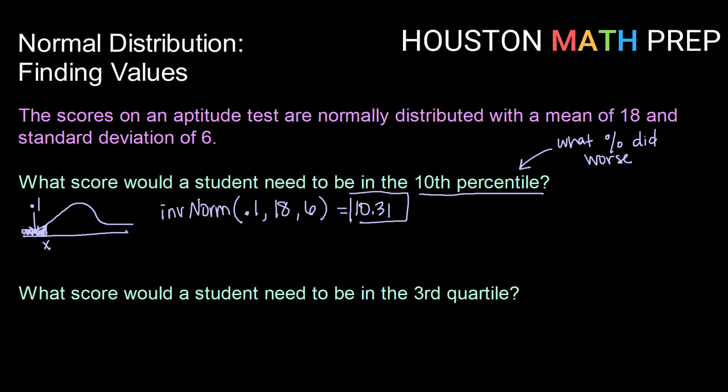All right, what score would a student need to be in the third quartile? So remember that quartiles divide our data into four equal pieces and 25% of the data is in each piece.